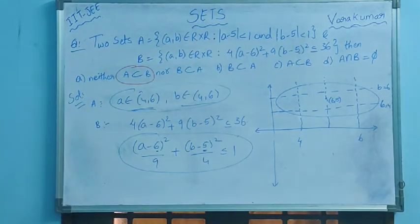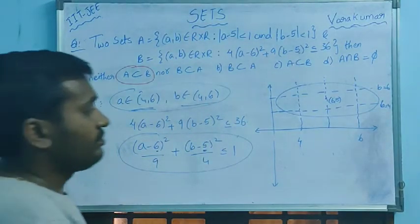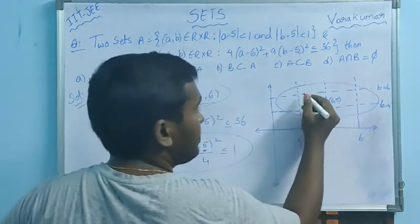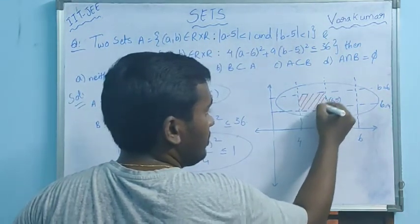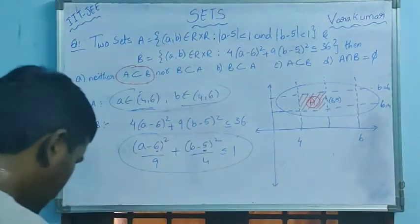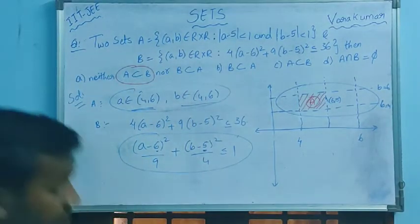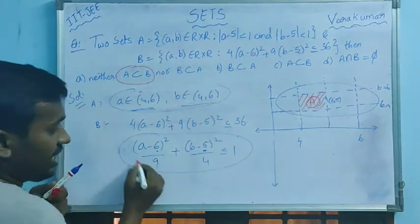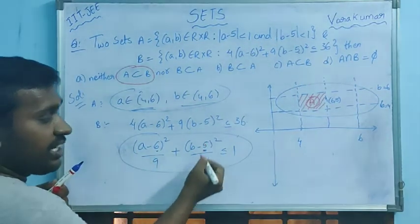Now, but according to this question: (a-6)²/9 plus (b-5)²/4 less than or equal to 1, so the whole region is for B.